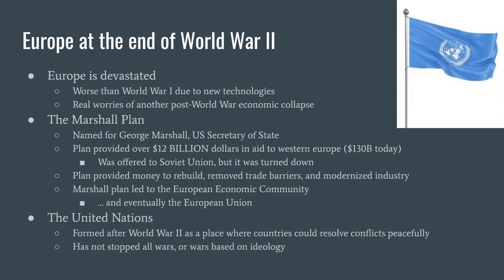It was offered to any country in Europe, and a lot of the Western European countries took it, but the Soviet Union refused. When the Soviet Union refused, all of the Eastern European countries being drawn in by the Soviet Union were forced to refuse it as well. There were a couple of parts to this plan: reducing trade barriers and tariffs, creating a modern industrial sector, and everyday rebuilding. Ideally, the rebuilding was going to be done by American firms so that America got back some of this money.